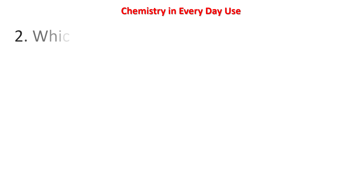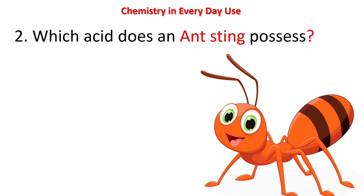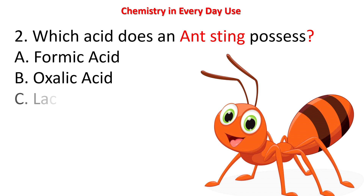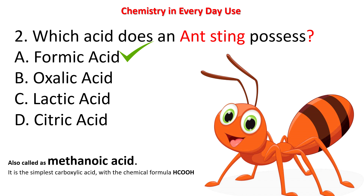Next question: which acid does an ant sting produce? Options: formic acid, oxalic acid, lactic acid, citric acid. The answer is formic acid. You should also understand that sometimes they may give the option as metanoic acid instead of formic acid — formic acid is also known as metanoic acid. It is the simplest carboxylic acid with the chemical formula HCOOH.